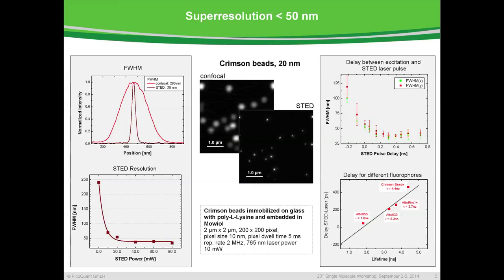In addition, there are other parameters that you can choose. To the right, you see the delay between the excitation and the STED laser pulse. We plotted the full-width half maximum in X and in Y for fluorescent beads over the pulse delay between the two pulses. If you go to the optimum, you have well below 50 nanometer resolution, and this is a quite robust parameter — you can add plus or minus 200 picoseconds between the two laser pulses and still be below 50 nanometers. Interestingly, this delay is different for different fluorophores; it actually depends on the fluorescence lifetime. For one nanosecond longer lifetime, you have to add approximately 150 picoseconds between the two pulses.